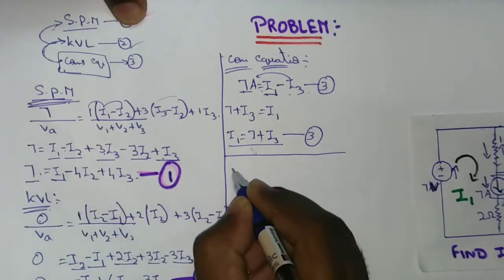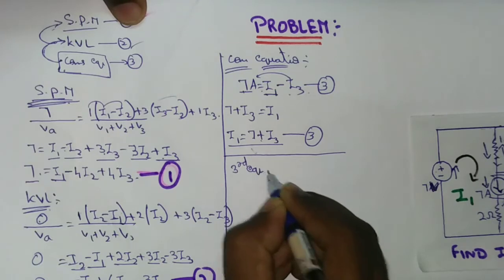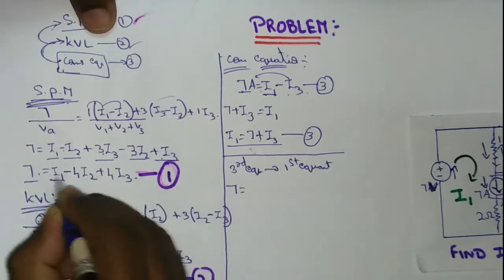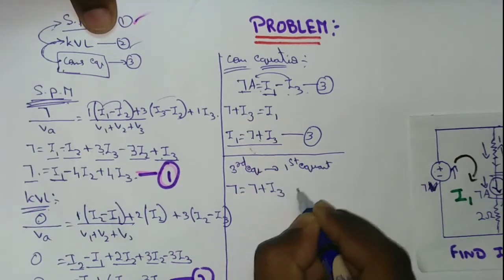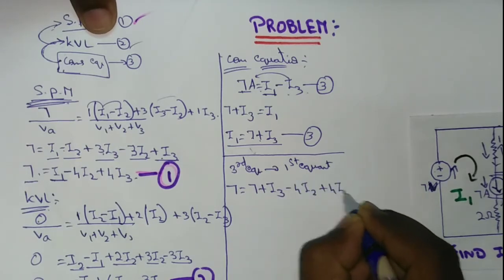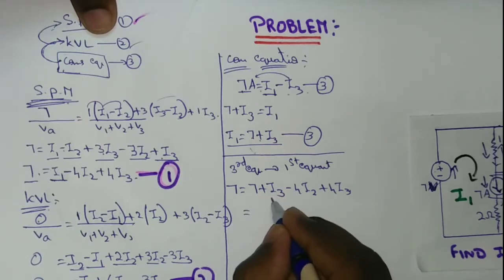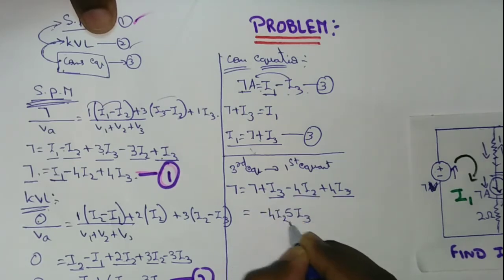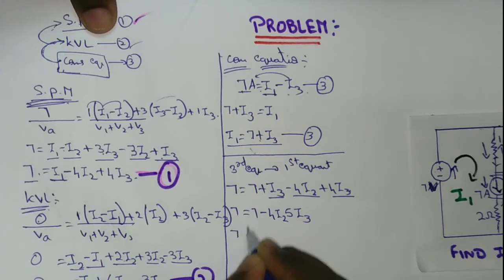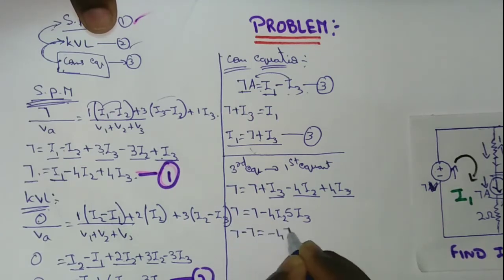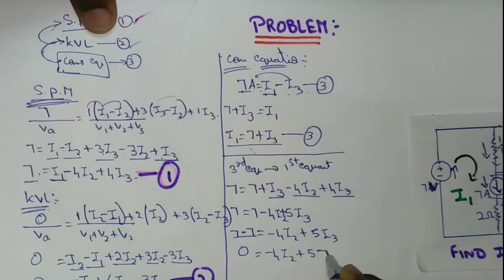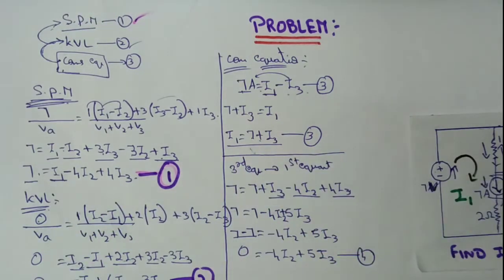First equation and third equation: substitute. 7 equals I1, and I1 equals 7 plus I3. So substituting: minus 4I2 plus 4I3, now 5I3 minus I2 — so 7 minus 4I2 plus 5I3 equals 0. This is the fourth equation.